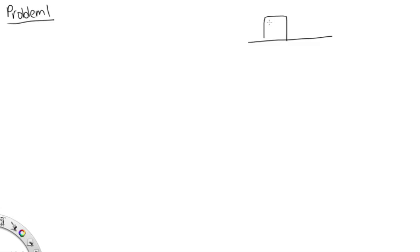Problem 1. In this problem, we've got a frictionless surface and two blocks. We've got one of mass 1, where mass 1 is 2.0 kilograms, and a block of mass 2, which has a mass of 1.0 kilograms. We have a force of 3.0 newtons acting on them. In part A, we're asked to find the force of contact between the two blocks — basically how much force block m1 is pushing on block m2 with.